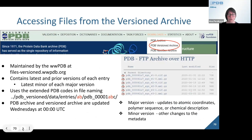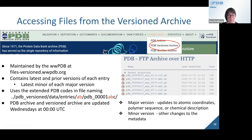PDB also supports a versioned archive, which contains the latest and prior versions of each PDB entry — specifically, the latest minor version of each major version. A major version number increment is triggered by updates to atomic coordinates, polymer sequence, or chemical description, while minor versions reflect other metadata changes. In the versioned archive, data are grouped using the extended PDB code. Note that both the PDB archive and the versioned archive are updated on Wednesdays at midnight UTC.